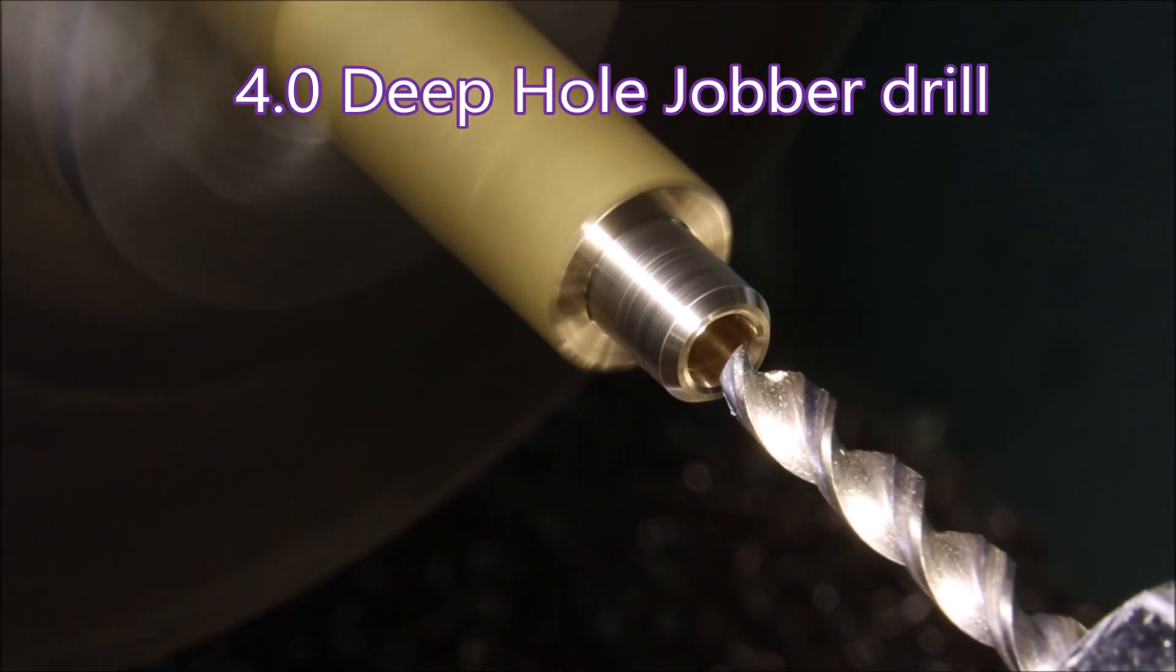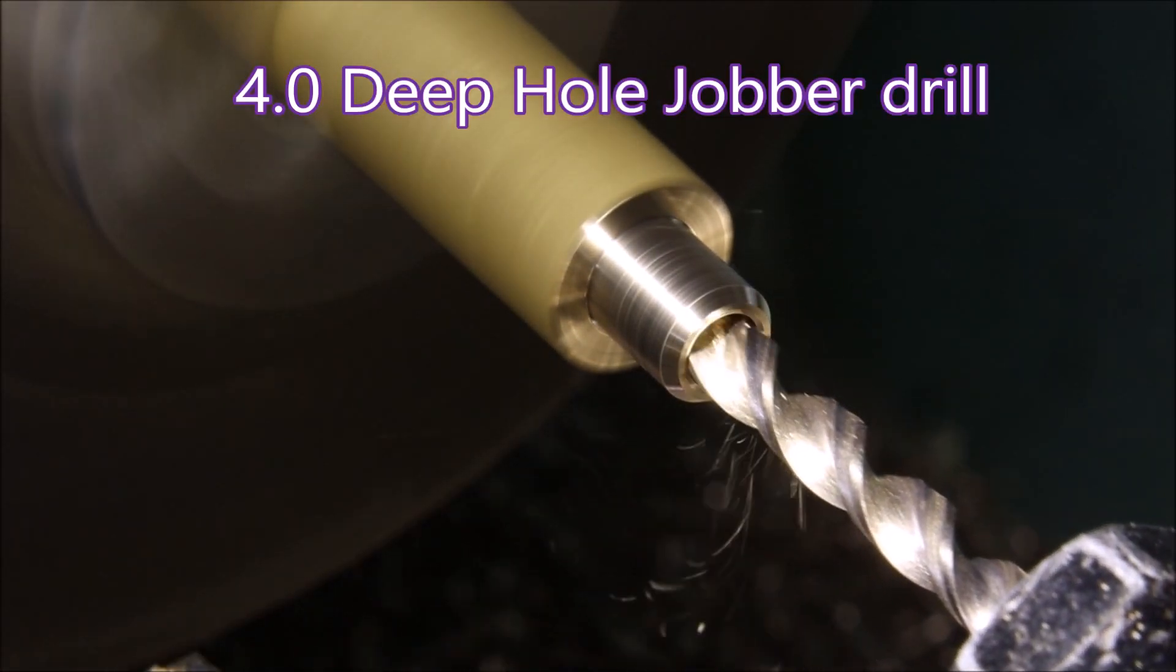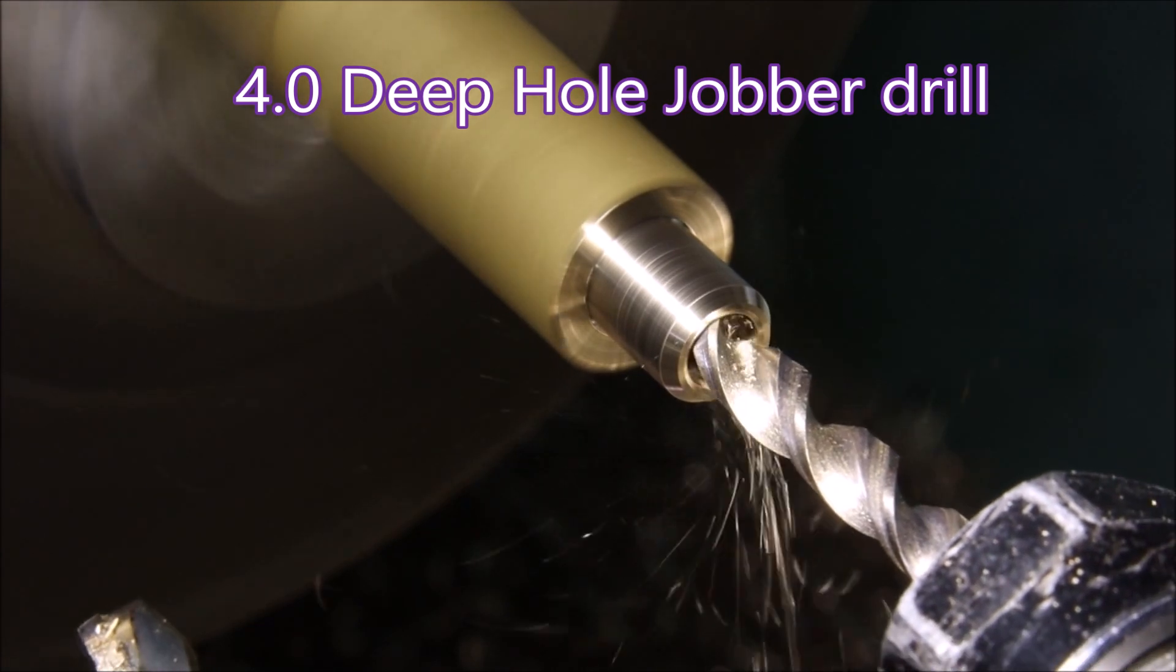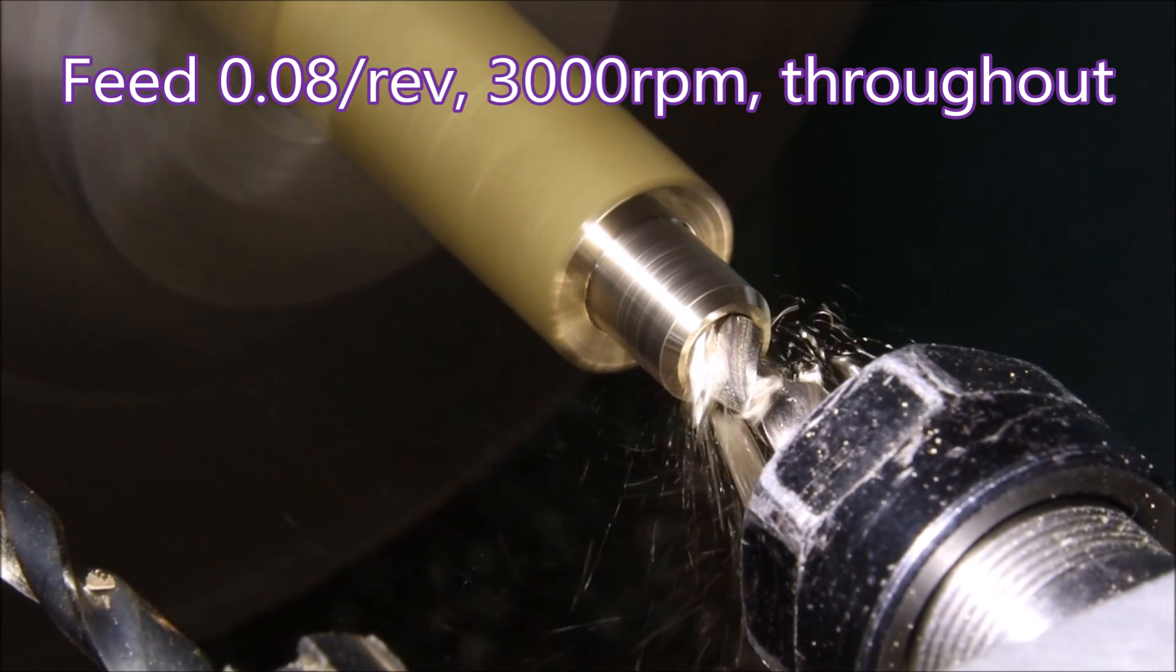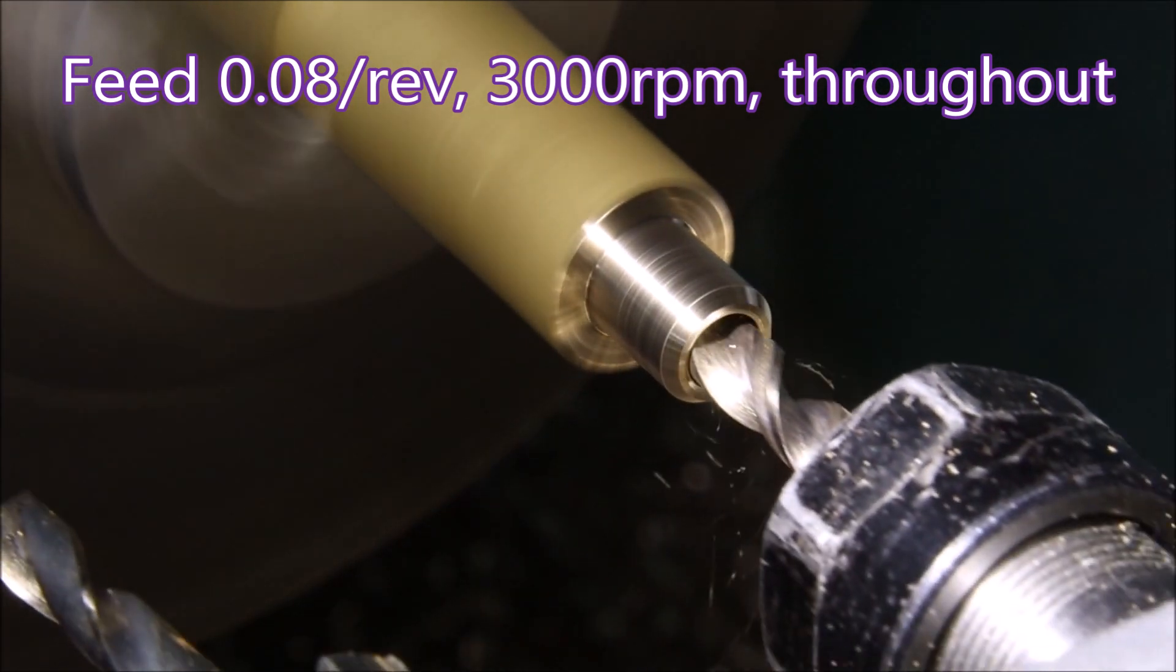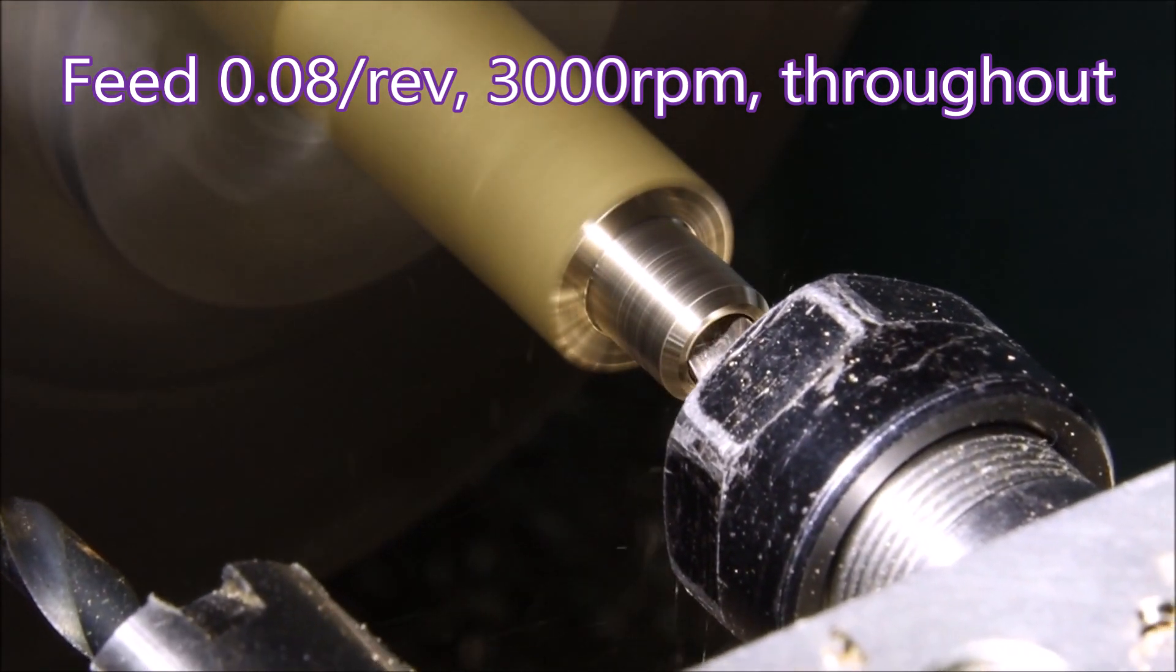Now you'll see I'm using a deep hole jobber to actually get the full length of the drilled hole. The reason I used a stub drill was to give a bit longer guidance for the deep hole jobber rather than just spotting and hoping it would come out in the right place.